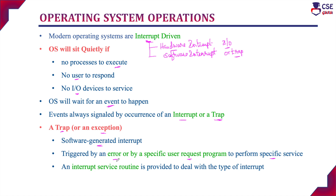Whenever a software interrupt or trap is raised, a separate interrupt service routine will be provided to deal with that type of interrupt. For every software interrupt, there is a corresponding interrupt service routine — that is a separate code segment which decides what action to be taken for that particular interrupt. So for every specific error, a separate code decides what action to be taken. That is called an interrupt service routine, which handles all types of software interrupts.